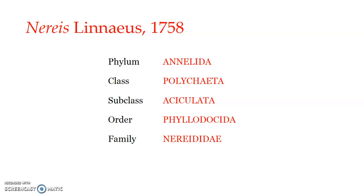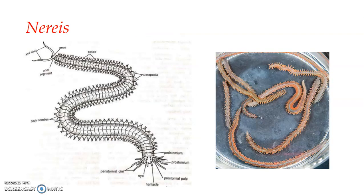Nereis is a typical polychaete genus. They live in burrows in sand or mud, often among clams, which is why they are referred to as clam worms. Because they are found buried in sand, they are also referred to as sand worms. These are commonly known as clam worms or sand worms, and are collected from burrows in the sand along the seashore.